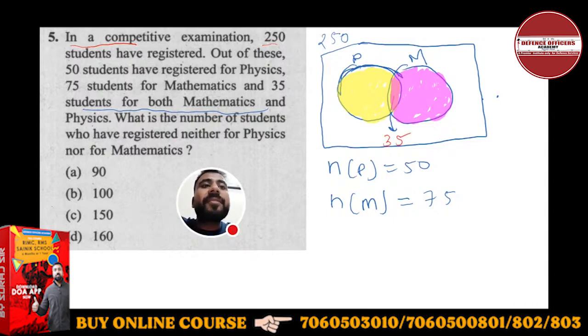Now it will be very easy for me to find how many are in physics - only in physics. This portion, only in physics. To find only physics has become very easy. Total physics has 50, and the common portion is 35. If you will do 50 minus 35, you will get 15 here.